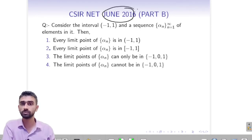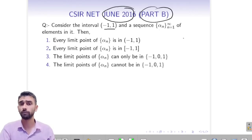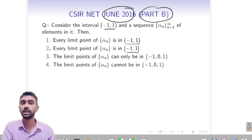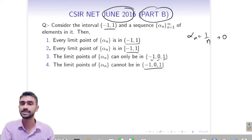There was a question in June 2016, Part B: you have the open interval (−1, 1) and a sequence α_n, n = 1 to ∞. The options discuss where the limit points must belong. Let's find counterexamples. Taking α_n = 1/n, as n → ∞ it tends to 0, so 0 can be a limit point. Option 4 says the limit point cannot be −1, 0, or 1 — that is clearly incorrect.